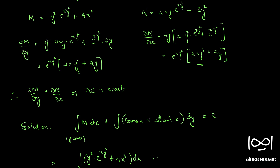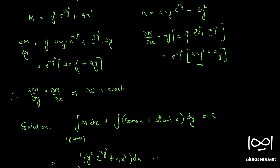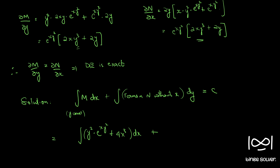So the terms in N without x: the only term without x is minus 3y squared. So we have the integral of M dx plus the integral of minus 3y squared dy equal to c.